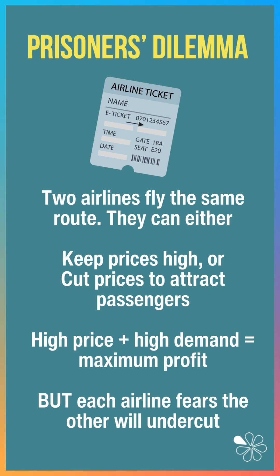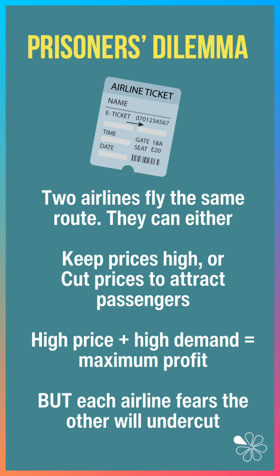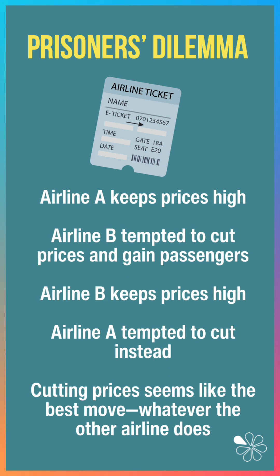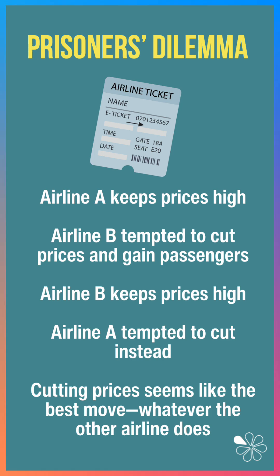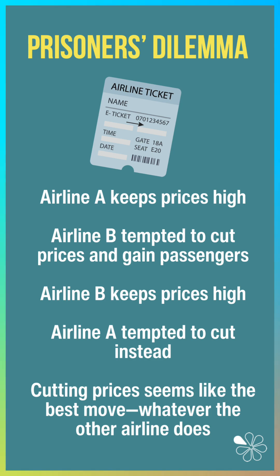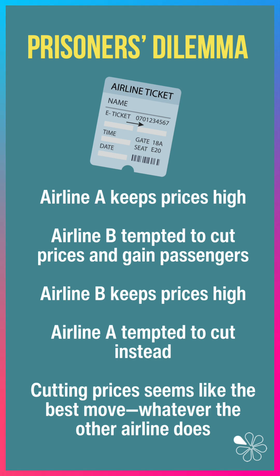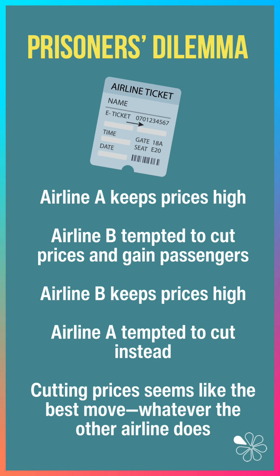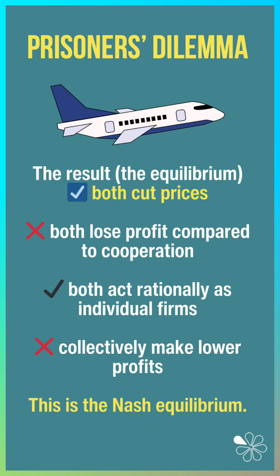A high price plus high demand equals maximum profit, but each airline fears the other will undercut. So if airline A keeps prices high, airline B is tempted to cut prices and gain passengers. If airline B keeps prices high, airline A is also tempted to cut instead. So cutting prices seems like the best move whatever the other airline does.